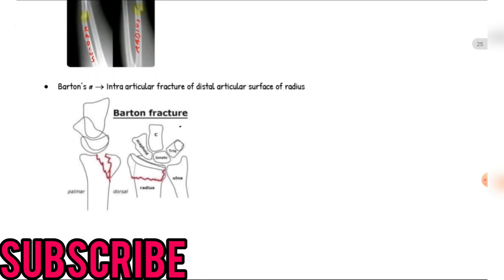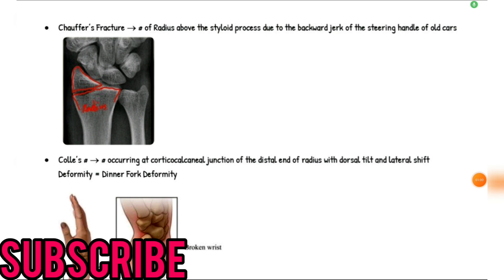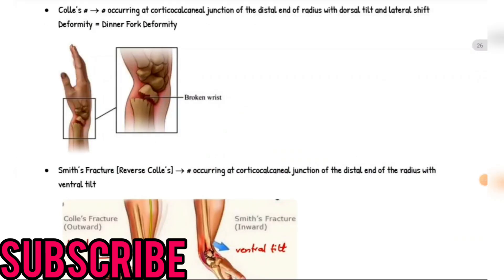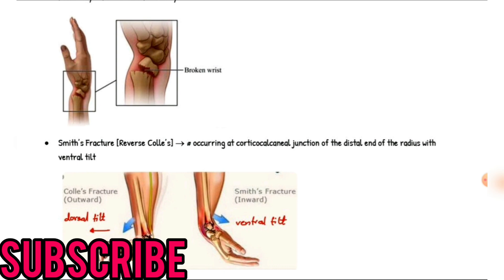Next is the Barton's fracture: intra-articular fracture of the distal articular surface of the radius. Next is the Chauffeur's fracture: fracture of the radius above the styloid process due to the backward jerk of the steering handle of old cars. Next is the Colles' fracture: fracture occurring at the cortico-cancellous junction at the distal end of the radius with dorsal tilt and lateral shift deformity — dinner fork deformity.